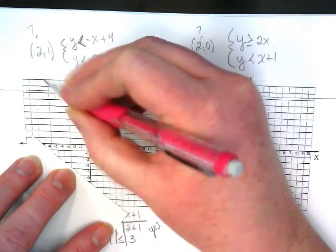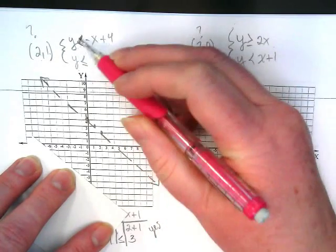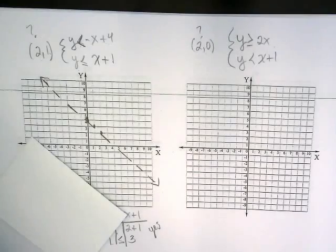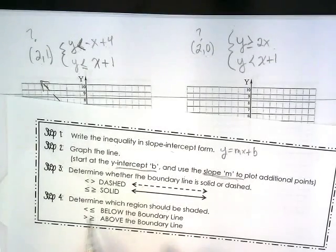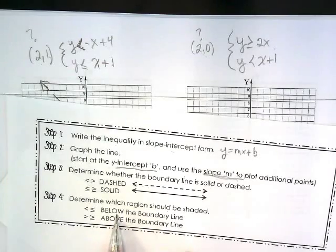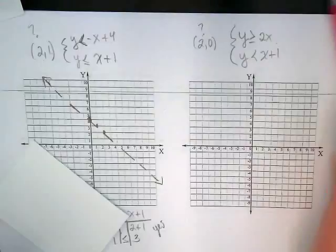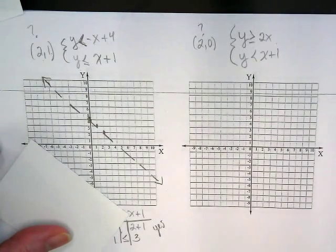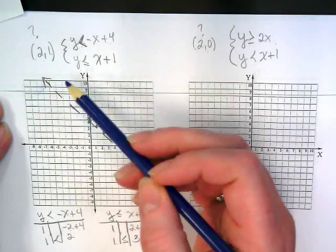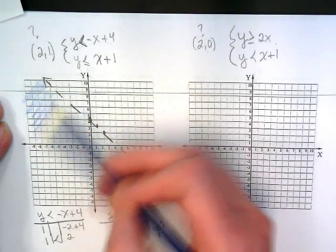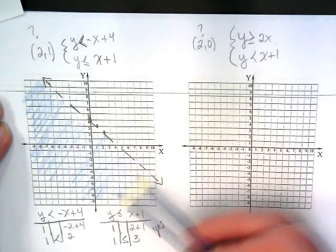And then I also have to think about, where am I shading this? It's less than, so is that going to get shaded above the line or below the line? Less than means it is below the line. This is where we're going to start using our two colors. So I'm shading here. You can take it all the way up to that boundary dashed line.